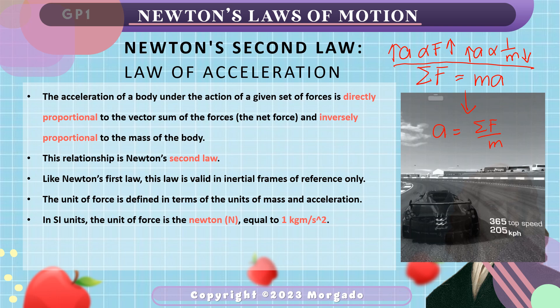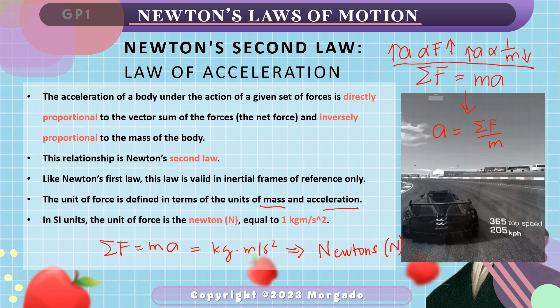The unit of force is defined in terms of the unit of mass and acceleration. The summation of force is equal to mass times acceleration, where mass is in kilograms and acceleration is in meters per second squared. This unit is simplified into the unit known as newtons, written in capital letter N with respect to Sir Isaac Newton. So one newton is equal to one kilogram meter per second squared.